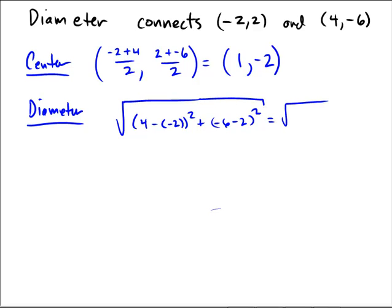We're getting square root of 6 squared plus negative 8 squared. That's the square root of 36 plus 64, so the square root of 100, which is 10. That's convenient, nice numbers there.